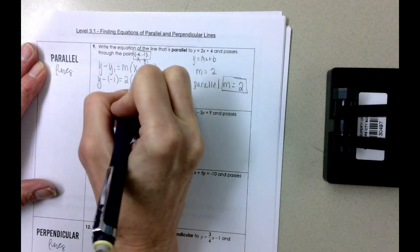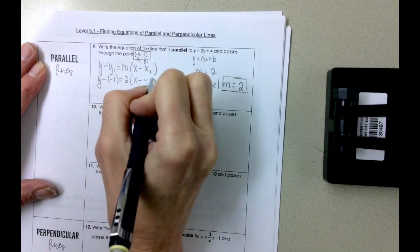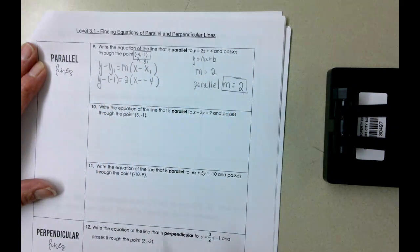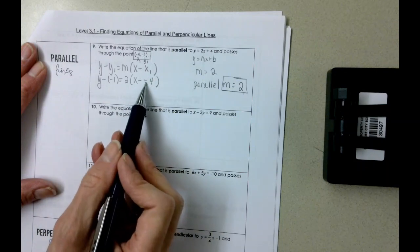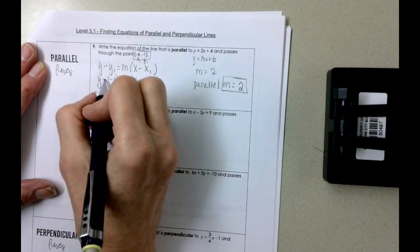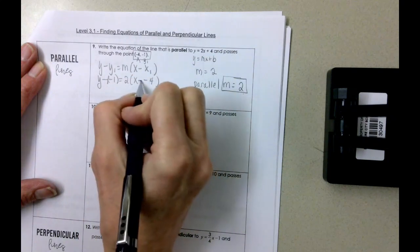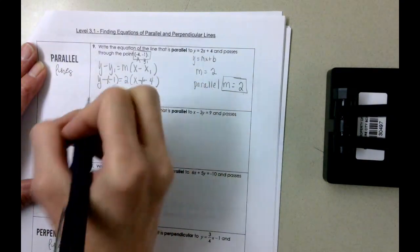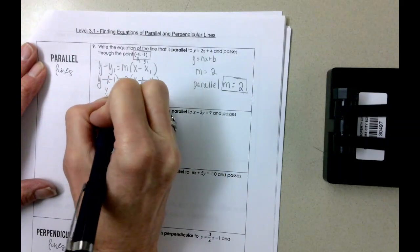That's the formula that we wrote at the bottom of your paper. Here's x1 and here's y1. So y minus a negative 1 equals 2, what we just found, times x minus a negative 4. So whether you put an extra parentheses or write it like minus a negative, double negative gives us a positive.